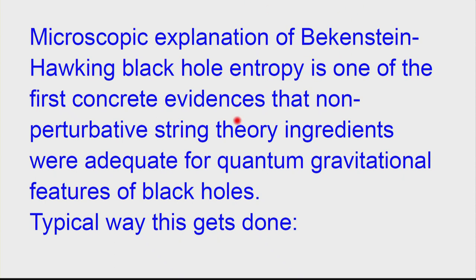The microscopic explanation of Bekenstein-Hawking entropy is one of the first concrete evidences in string theory that we perhaps have the right ingredients to describe quantum gravity. It correctly accounts for Black Hole Entropy in particular. But the typical way this gets done is a little bizarre — it's always an indirect path. Namely, we relate the Black Hole to a black string.